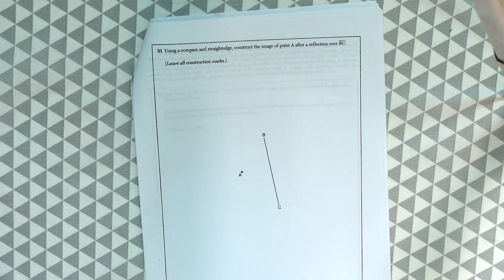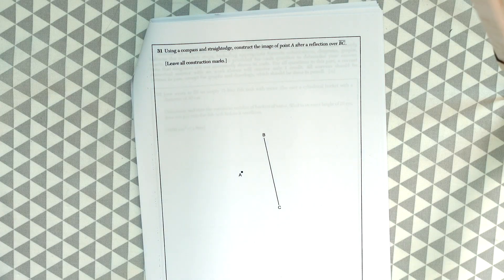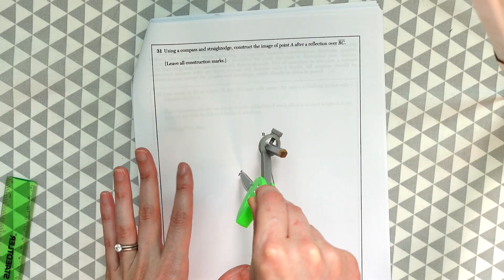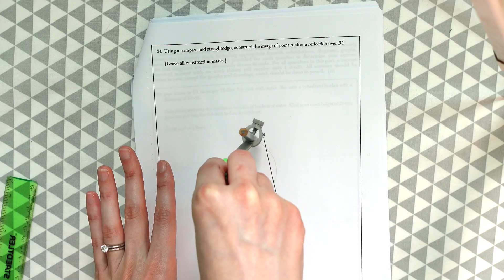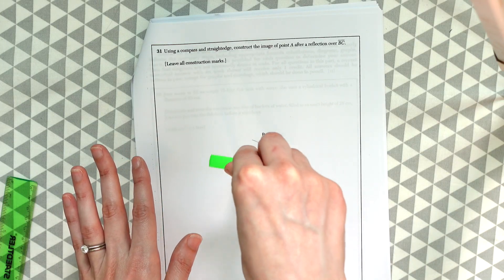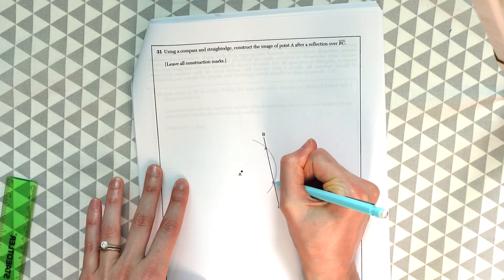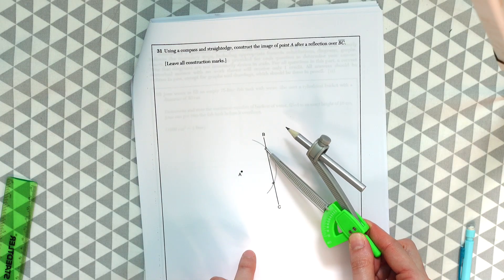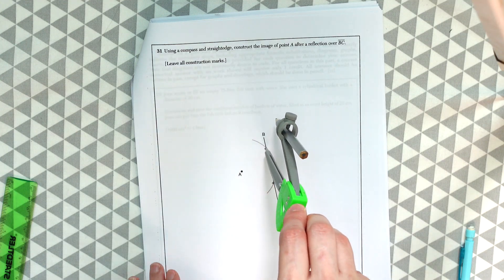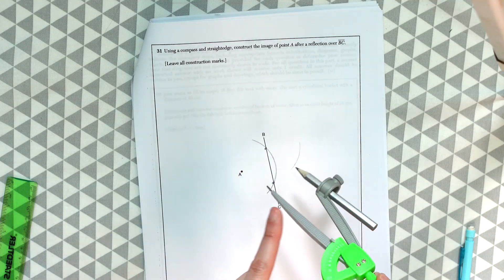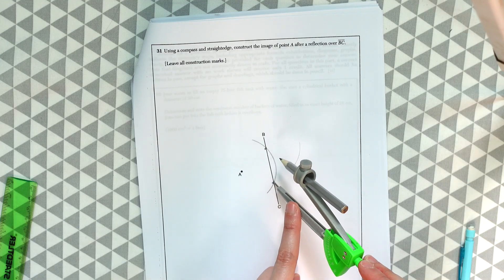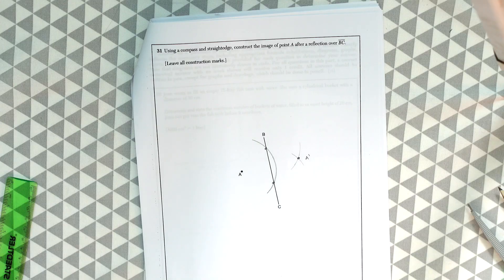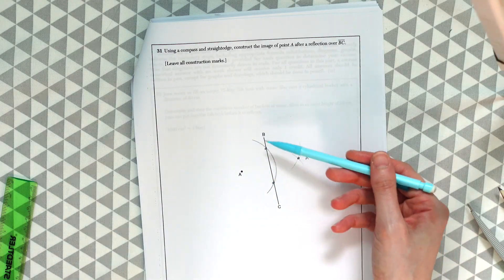Question 31. Using a compass and straightedge, construct the image of point A after reflection over BC. So the first thing I'm going to want to do is open up my compass a little bit and make sure that if I bring my point to point A, that I can swing this compass and make an arc that would hit this line at two times. This looks good. This looks like a good distance. So we're hitting this line BC two times. So we hit it once over here and once over here. Now we're going to take our point to one of the intersections that we just made and draw an arc on the other side of this line. So we're going to draw an arc over here. And then we're going to take the same point and bring it to the other point we made and draw another arc. And then now all we do is just mark our new point. And we've just successfully reflected our point A over line BC.